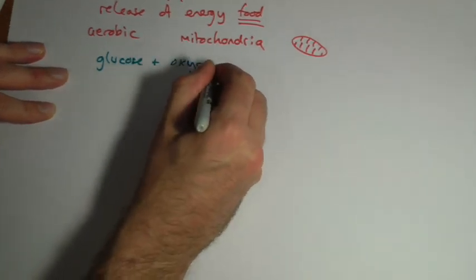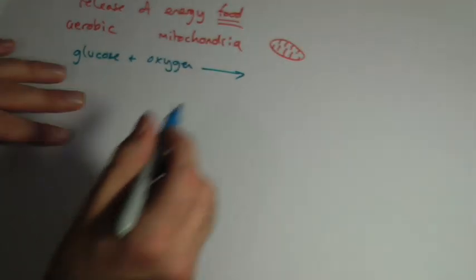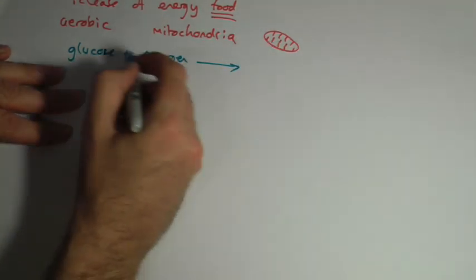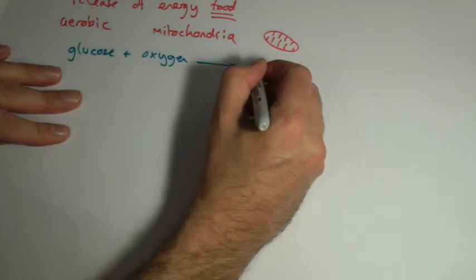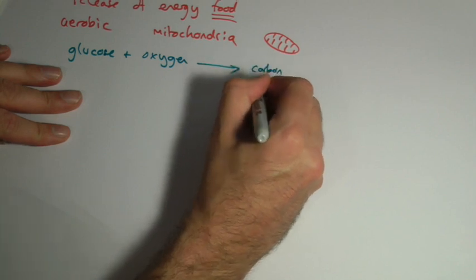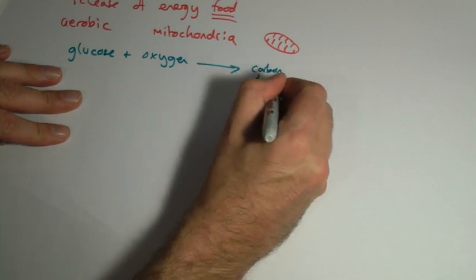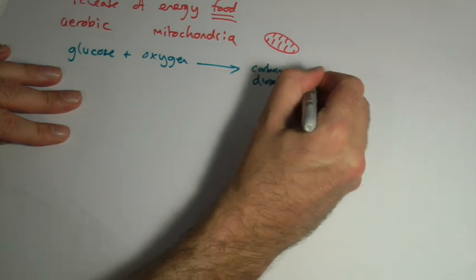It's aerobic so it uses oxygen, and this arrow is showing that the chemicals are being changed in some way, and of course what we get is carbon dioxide and water.